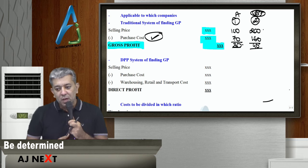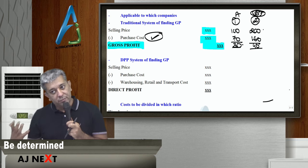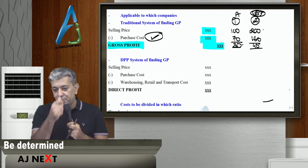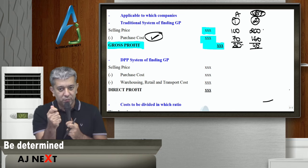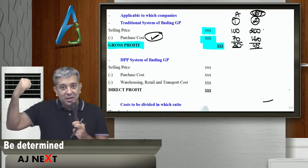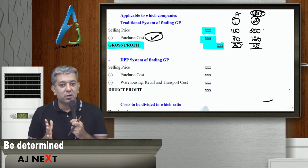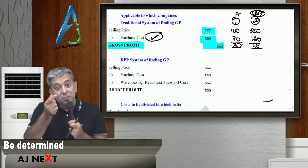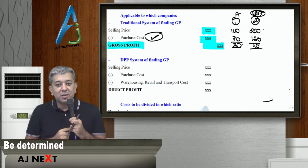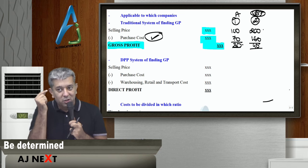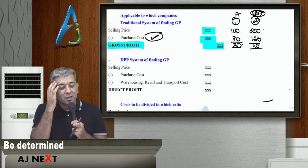I will give you a small example. Now, DMART, Walmart, if you see these companies, when they sell products, the moment they sell the product, the moment they do that scanning, the barcode, in the back end, the data is generated. Data means, this product, when it was purchased, when it was in stores, how much time it took to sell?